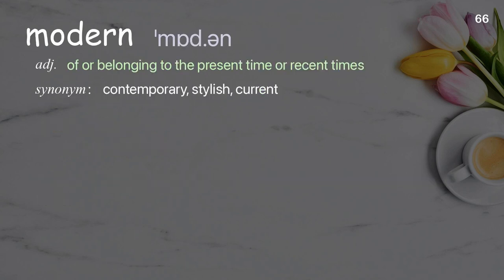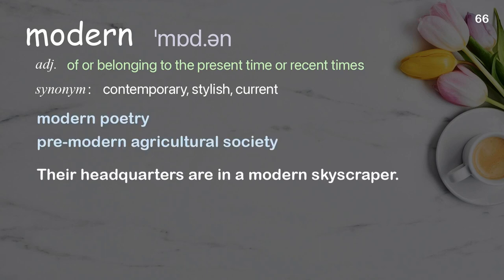Modern: of or belonging to the present time or recent times. Examples: modern poetry; premodern agricultural society. Their headquarters are in a modern skyscraper.